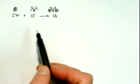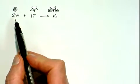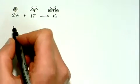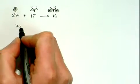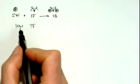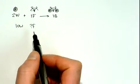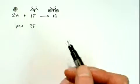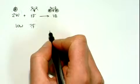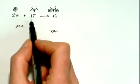So let's start with something basic. Essentially this is an equation — two wheels plus one frame makes one bike. So if I have, for example, ten wheels, how many frames would I need in order to use up all my wheels and make bikes? A lot of you can probably just do this in your head, but let's do it mathematically to really emphasize this point. If I have those ten wheels, I need some kind of conversion factor to tell me how many frames it would take.